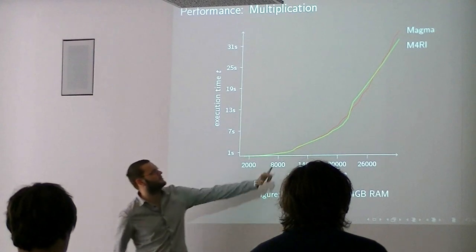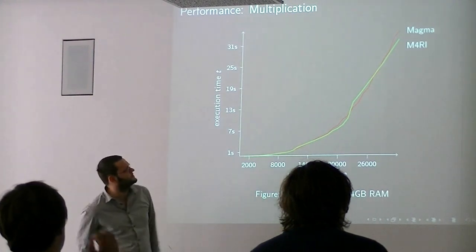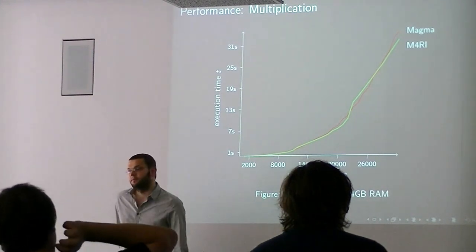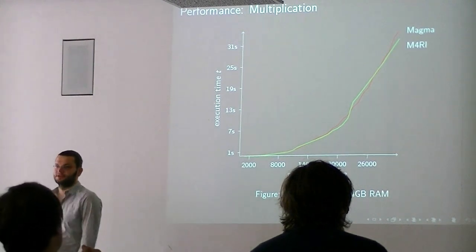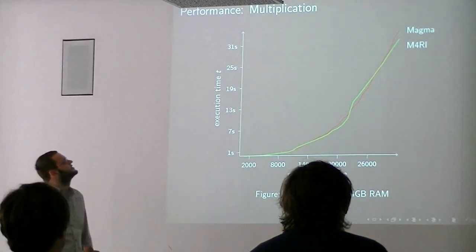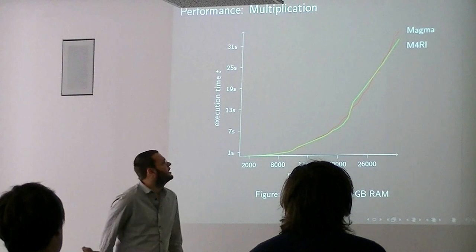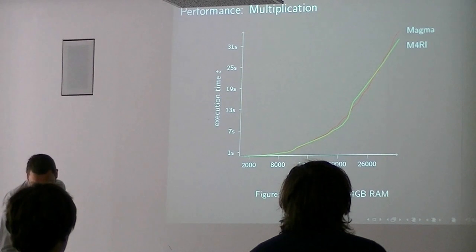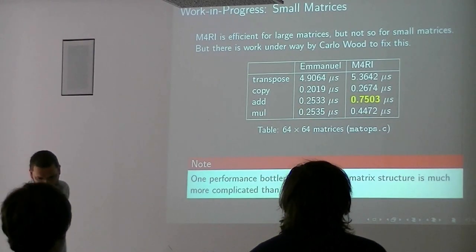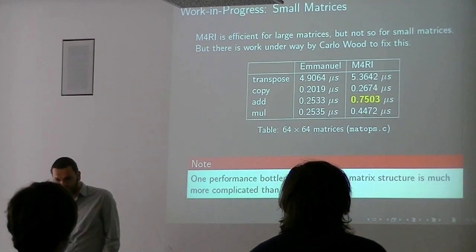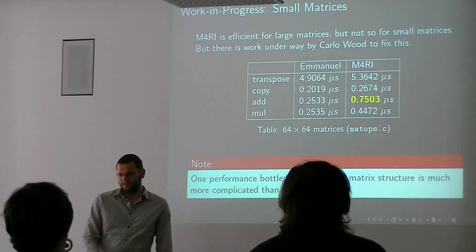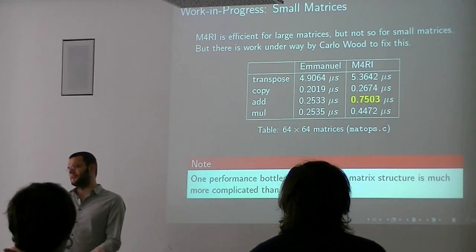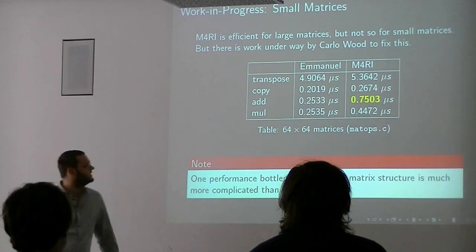So this is the performance that you end up with. Red, unfortunately you might not be able to see this as well, but it's roughly the same as the green one. The green is the MAGMA implementation, which Allan Steel did a very good job implementing multiplication of matrices over GF2, and then the other one is just our implementation. And that is on my computer. It's work in progress, but it's not really work in progress, it's work I guess.